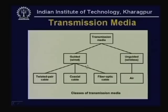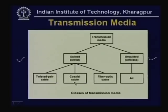The signal has to be sent through some transmission media. We shall discuss two different types of transmission media. All transmission media can be broadly divided into two types: guided and unguided. In the case of guided transmission media, there are three popular types: twisted pair, coaxial cable, and fiber optic cable. We shall discuss the characteristics of these three types of guided transmission media.